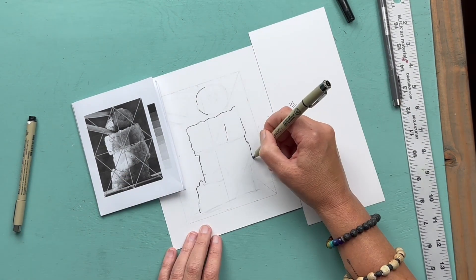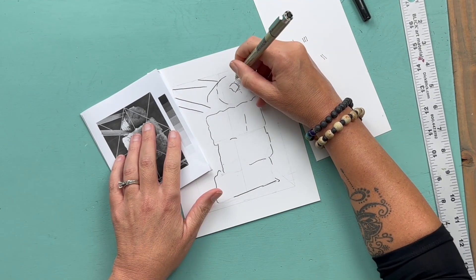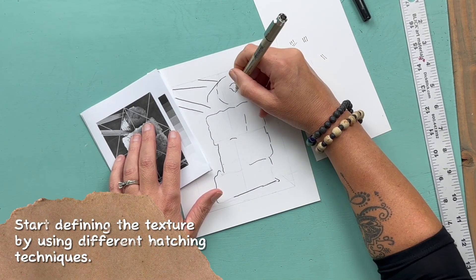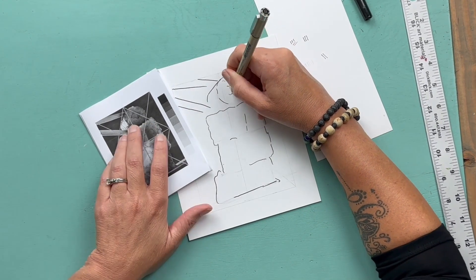Now I'm going through and mapping out some of those larger contour lines with a thicker marker, and then I'm going in and beginning to define some of the texture with the larger markers.